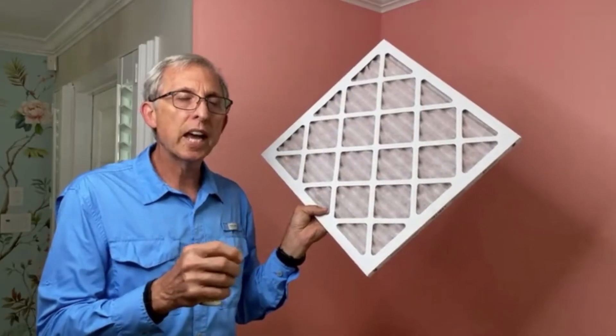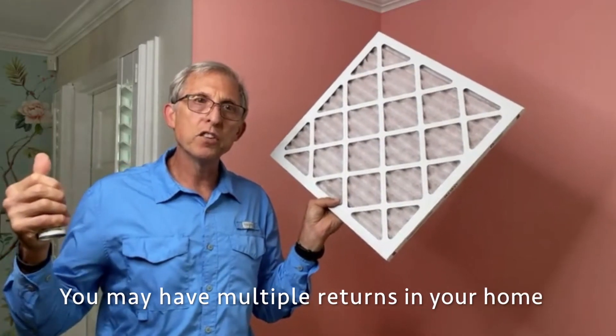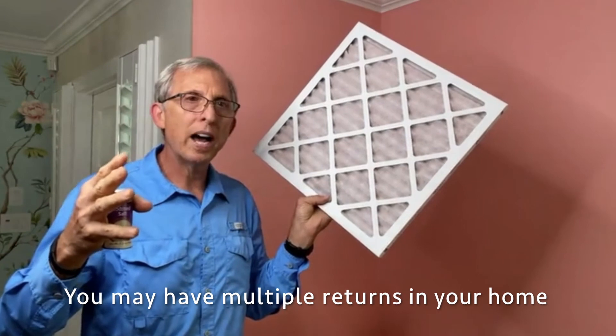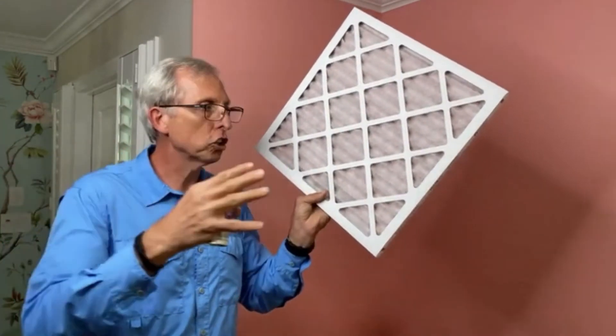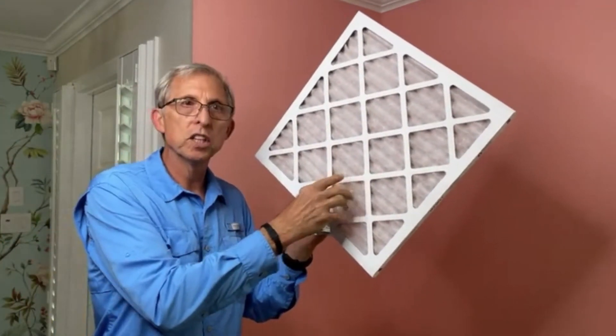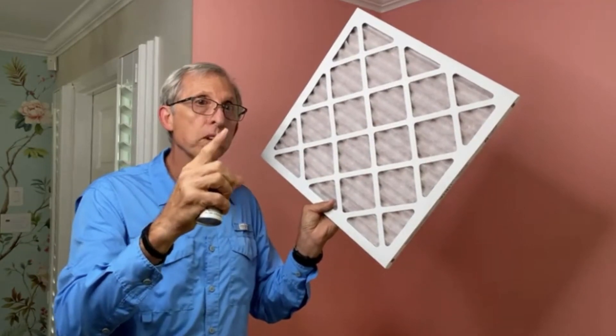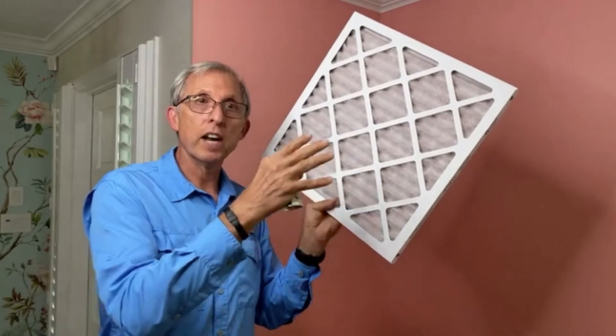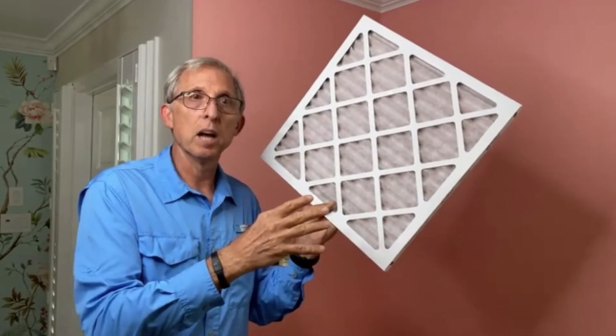When you use this type filter, sometimes you have to have multiple returns. You should usually have a main return in your living room and you should have returns in your bedrooms, because what happens as the airflow starts restricting going through these filters, if you've only got one, you're going to have a problem. But if you've got multiple returns, it'll give you a little bit of grace. You'll be able to handle it a lot better.